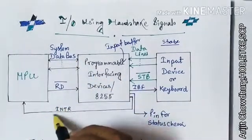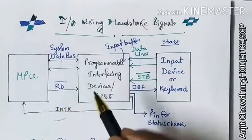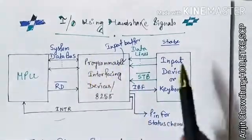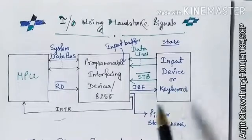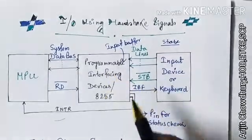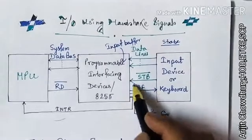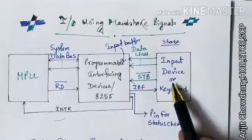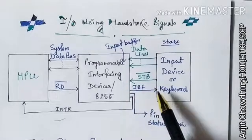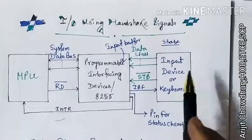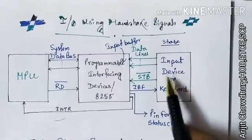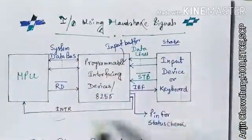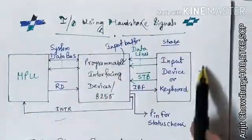When the microprocessor unit is reading the data through this line, the INTR pin is also disabled after completing the read of the whole data. Then the programmable interfacing device disables the IBF line. Now the user or input device can send another data byte or data word. If the user again presses a key on the keyboard, the process is repeatedly done.